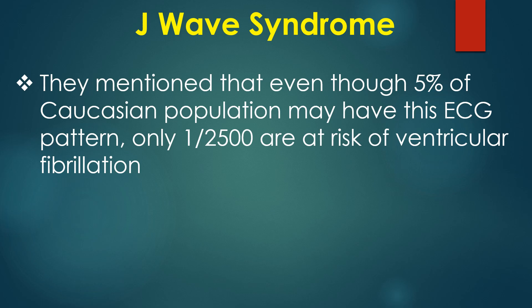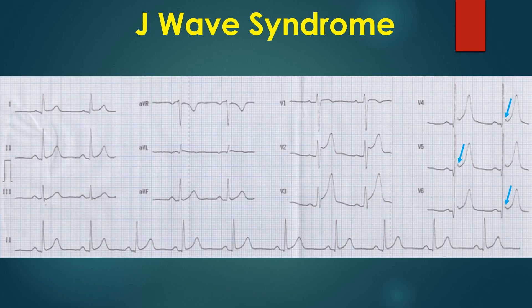They mentioned that even though 5% of the Caucasian population may have this ECG pattern, only 1 in 2500 are at risk of ventricular fibrillation. Here is another ECG with early repolarization syndrome, as evidenced by the concave upward ST segment elevation in leads V2 to V6. J waves have been marked by blue arrows.